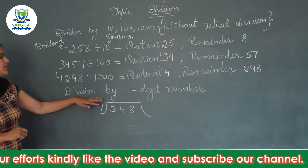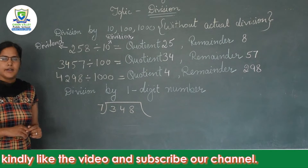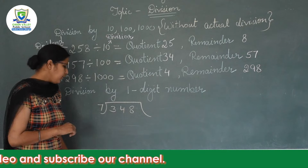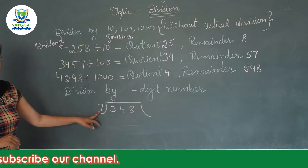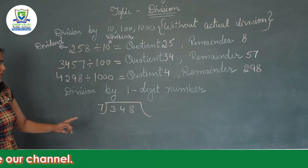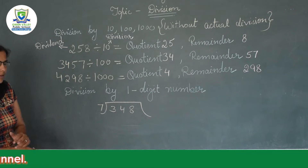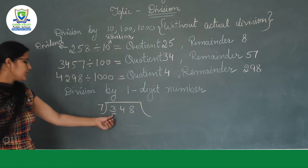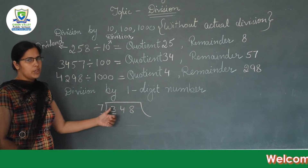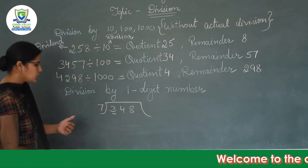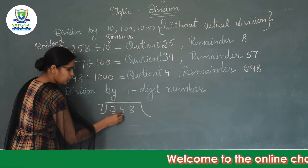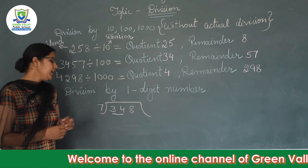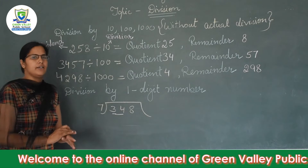Now division by a one-digit number. We have dividend 348 divided by 7. Since 7 is a single-digit number, we first look at only the first digit, which is 3. Since 3 is less than 7, we look at two digits: 34. Now read the table of 7 to find a product equal to or less than 34.